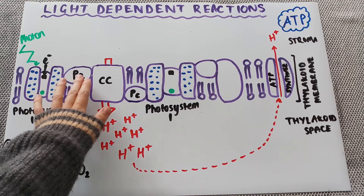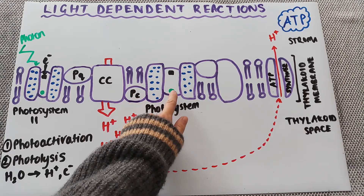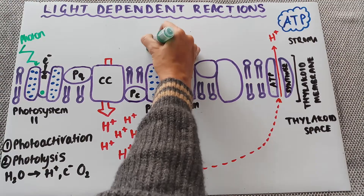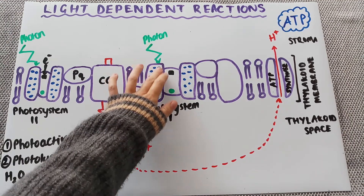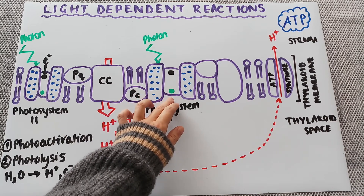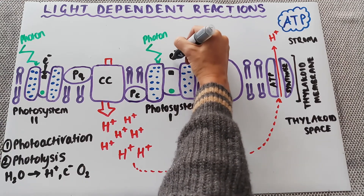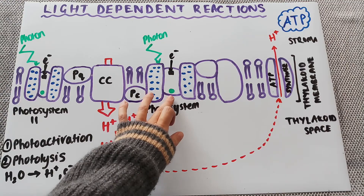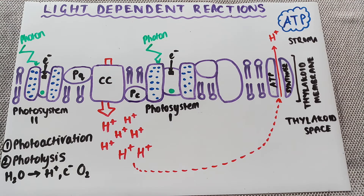Coming back to the electron transport chain: the electron has been de-energized as it passed through the first electron transport chain and is now with the chlorophyll A molecule in photosystem 1. The next thing that happens is another photon of light is absorbed by photosystem 1; it again goes through the accessory pigments until it reaches chlorophyll A and excites that electron up to the reaction center, where it is accepted by the electron acceptor. This is the same electron that has come right from the start — formed from the splitting of water.